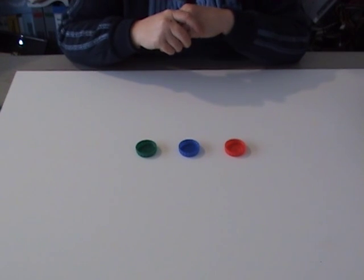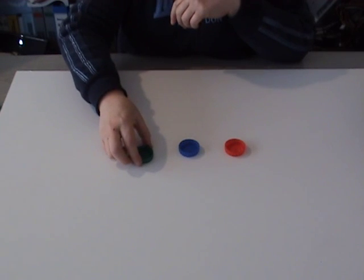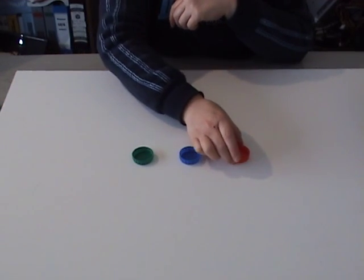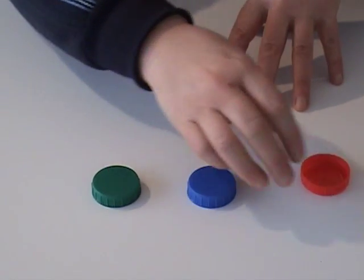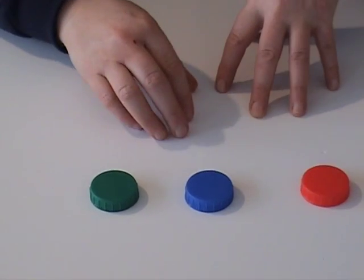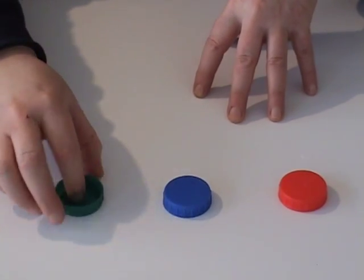If you're recycling milk bottle tops at the Green Centre, here are some tips. We collect green, blue and red milk bottle tops and this is how they're meant to look. No inserts, no tabs and no stickers.